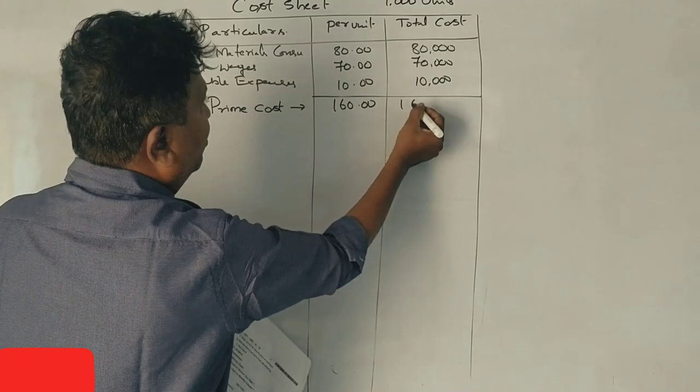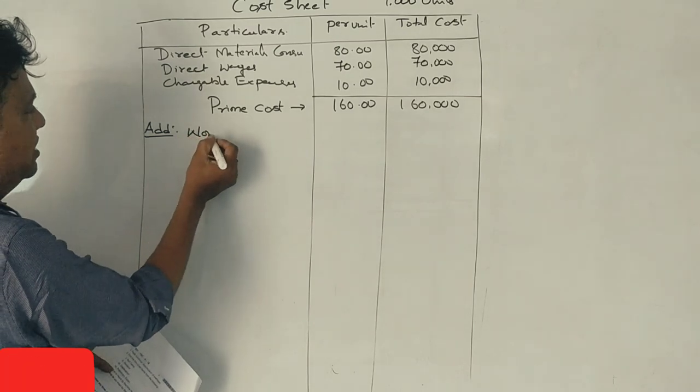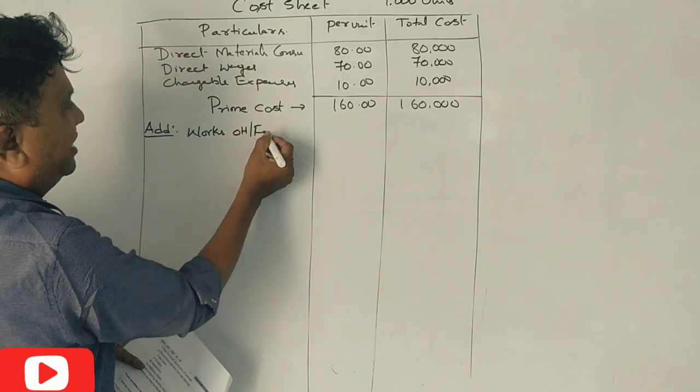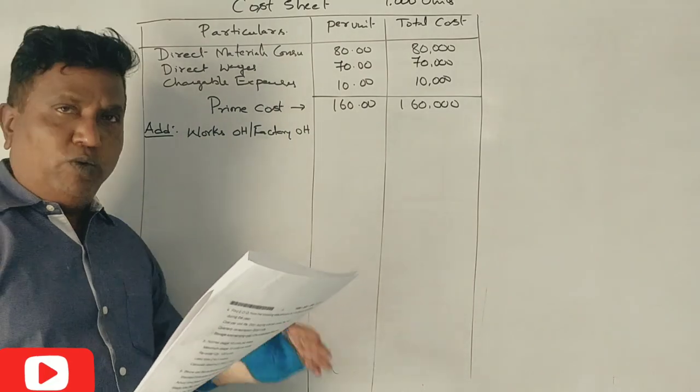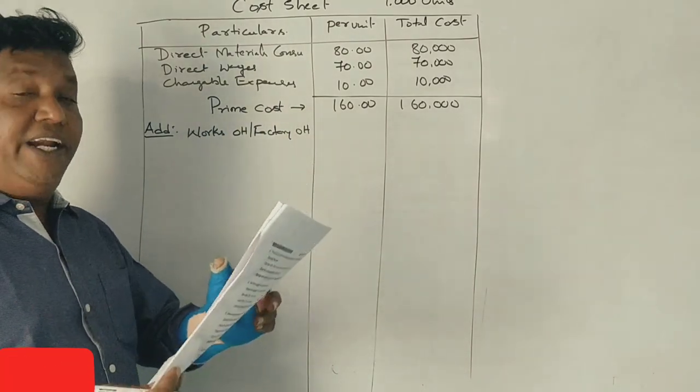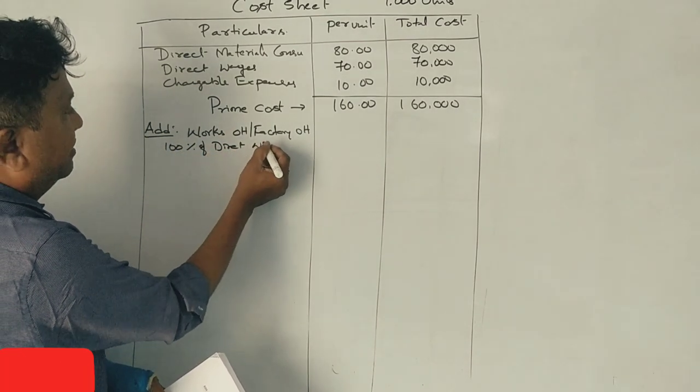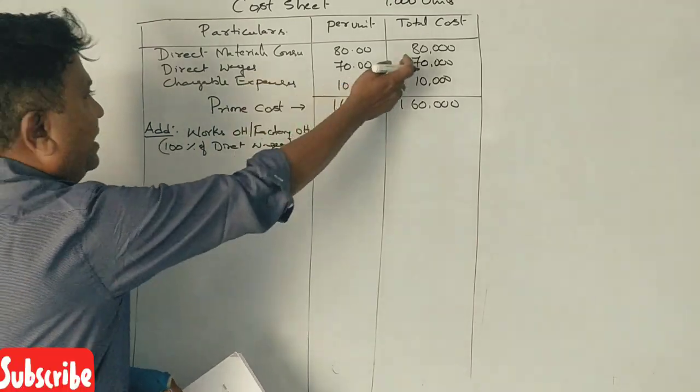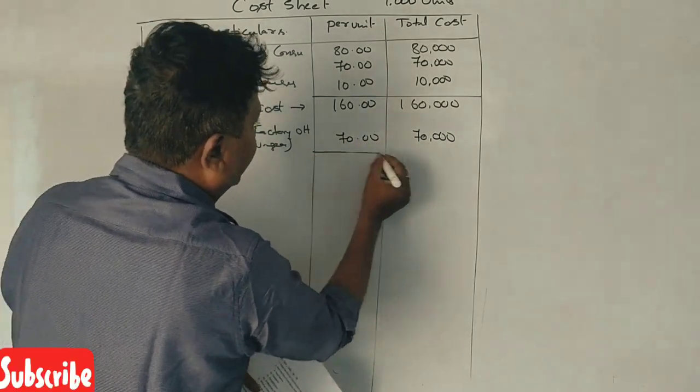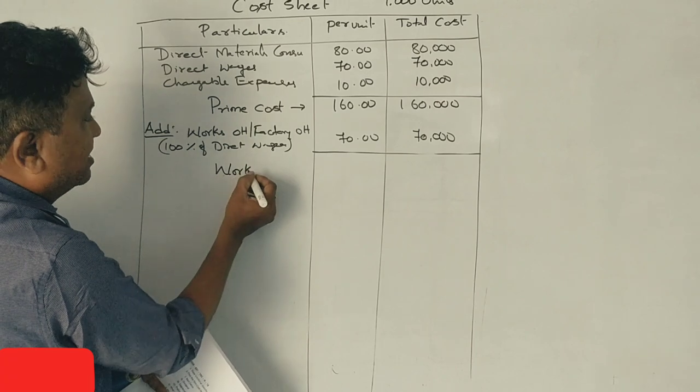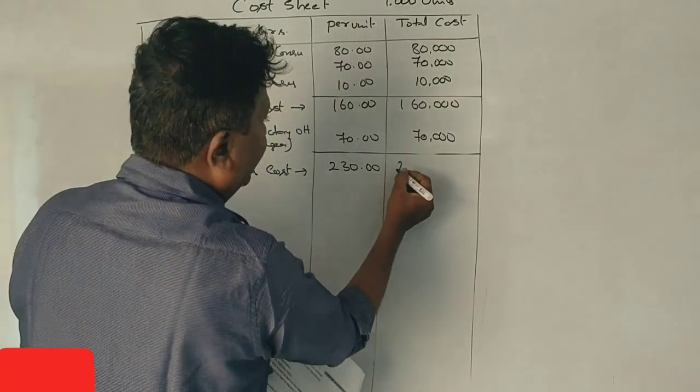Prime cost is Rs. 1,60,000 total, Rs. 160 per unit. Next is works cost.